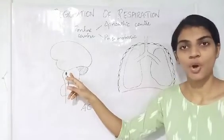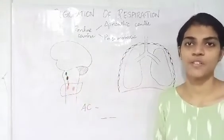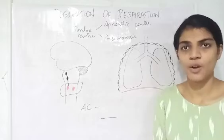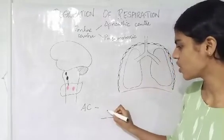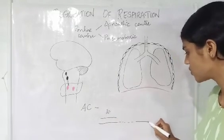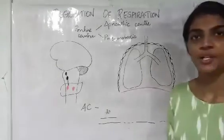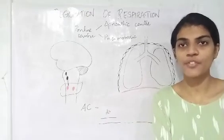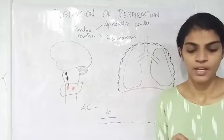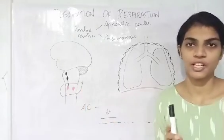So the pneumotaxic center has a role in increasing the respiratory rate — that is, increasing the total number of respirations per minute. The apneustic center, on the other hand, decreases the rate of respiration, because it prolongs inspiration beyond the normal two seconds before expiration occurs, reducing the number of full respiration cycles per minute. In summary: the pneumotaxic center increases respiratory rate, and the apneustic center decreases respiratory rate.